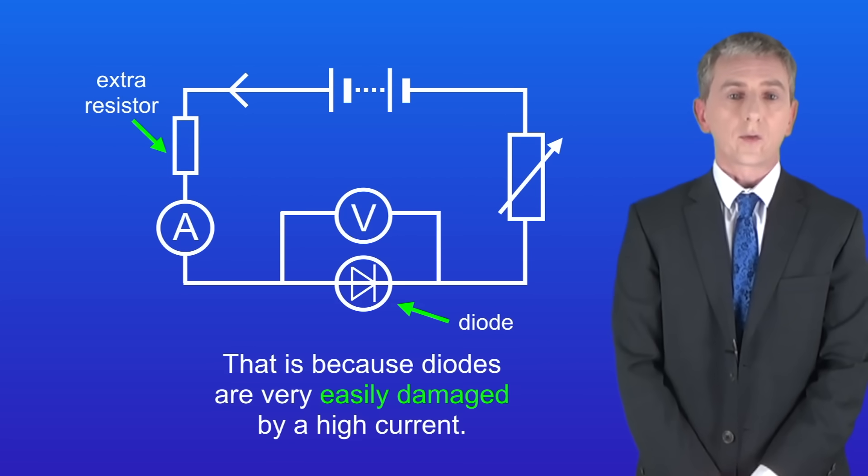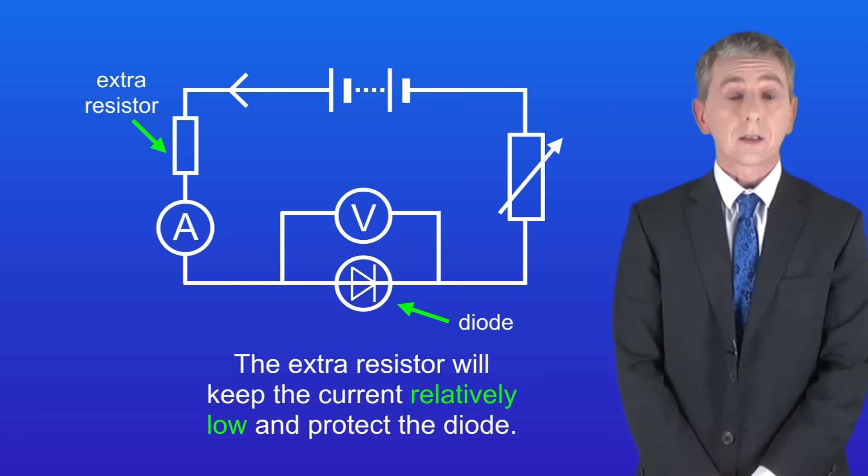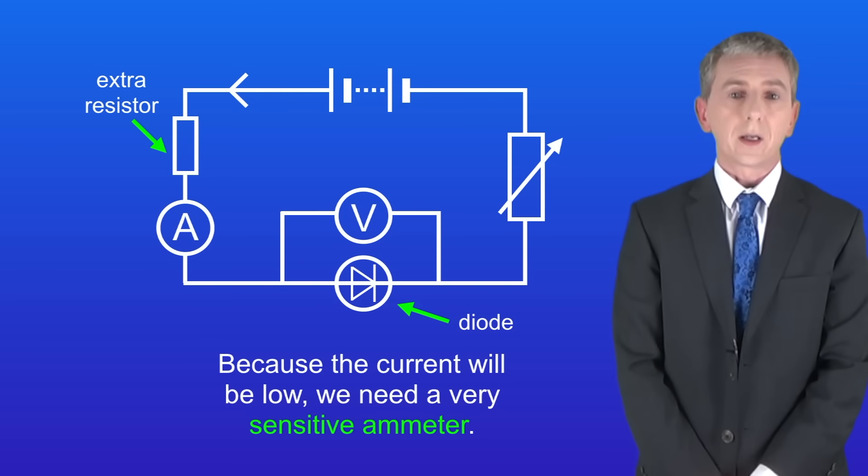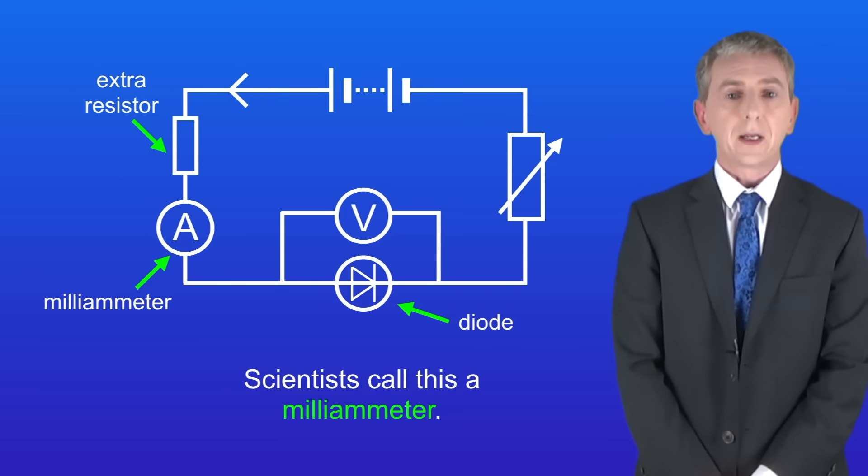That's because diodes are very easily damaged by a high current. The extra resistor will keep the current relatively low and protect the diode. Now because the current will be low we need a very sensitive ammeter. Scientists call this a milliammeter.